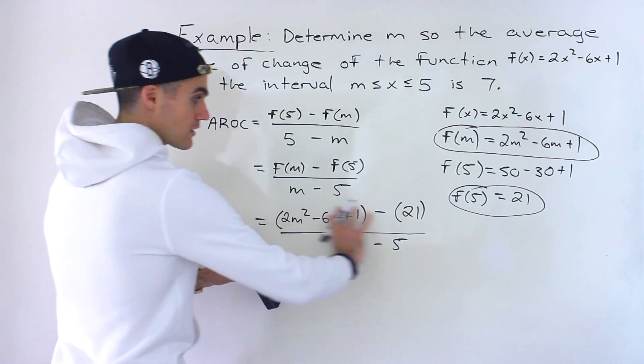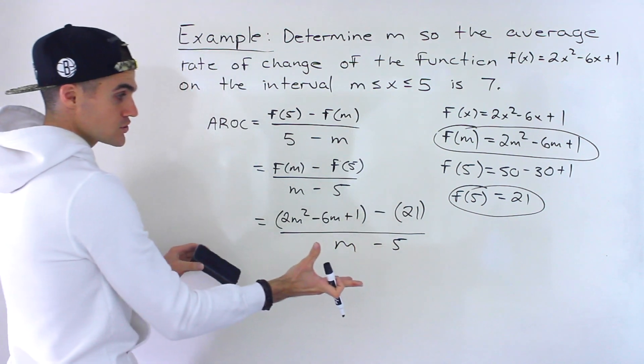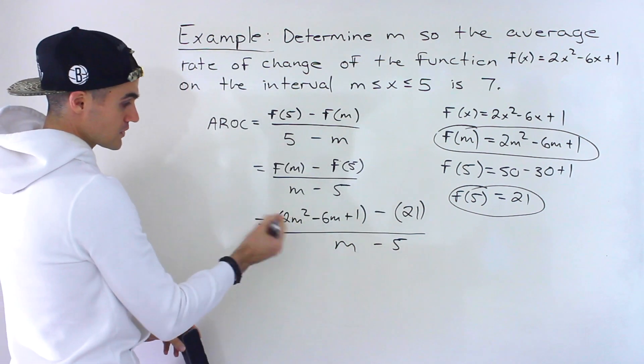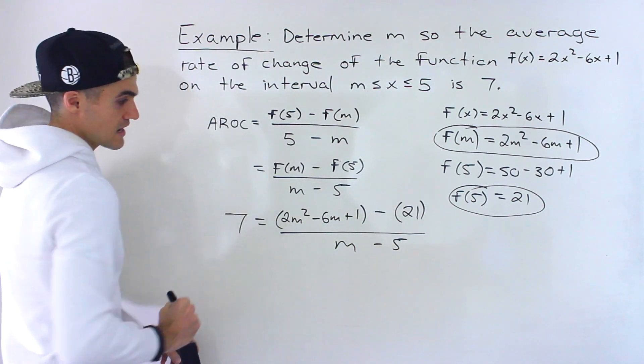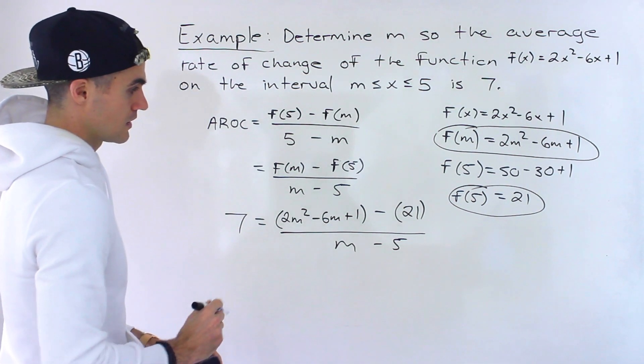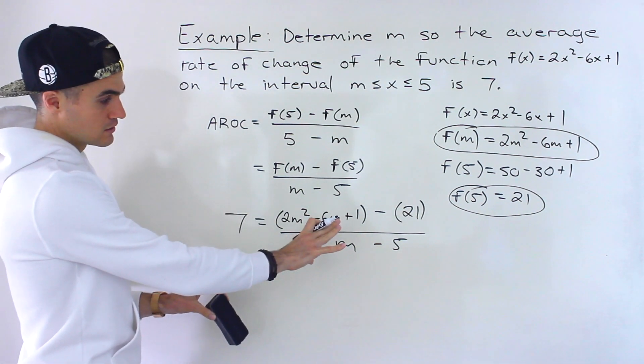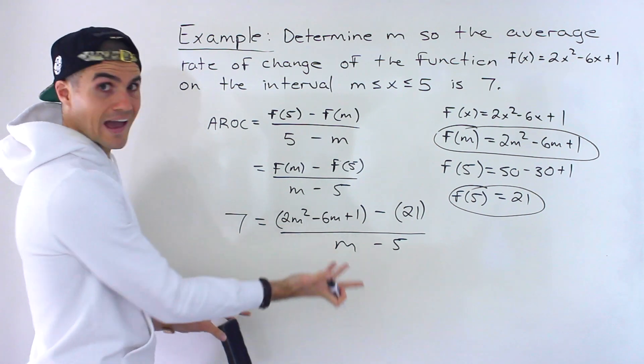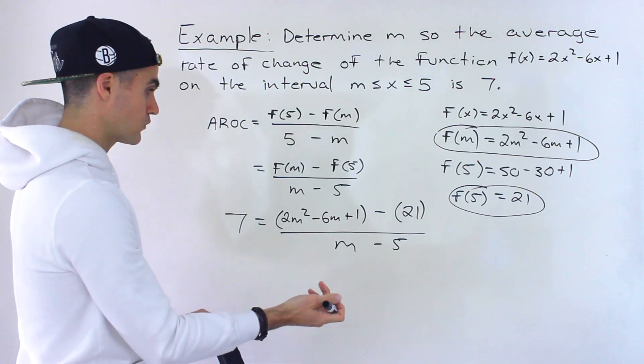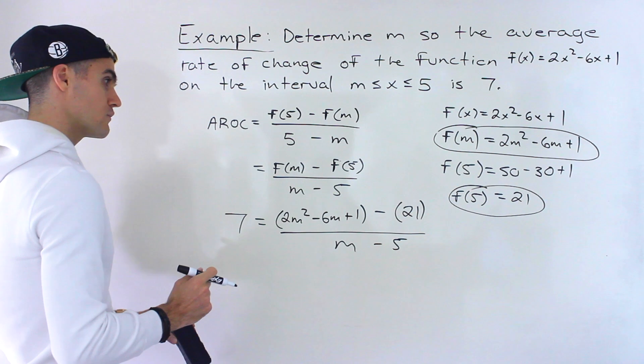So this here is the expression for the average rate of change. And we know the average rate of change is equal to 7 in this case. And so now notice we have an equation with one variable to solve, the m value, which is what we're looking for.